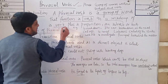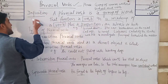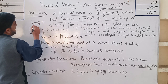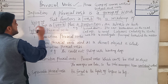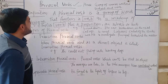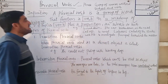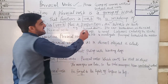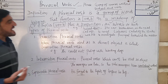A phrasal verb is made up of a verb plus a preposition. For example, 'bring up' — 'bring' is the verb and 'up' is the preposition. So the combination of verb plus preposition is called a phrasal verb. But it is not always the same — sometimes a verb plus preposition plus another verb are also possible.